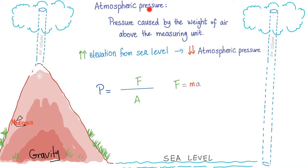Let's start at the beginning. Atmospheric pressure — hashtag physics, baby. The atmospheric pressure is the pressure caused by the weight of air above the measuring unit. So if you are on top of the mountain, this is the air column on top of your head. If you are here at sea level, this is the weight of the air on top of your head. You might conclude: when there is increased elevation away from sea level, there will be decreased atmospheric pressure because of less weight of air above.